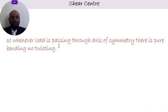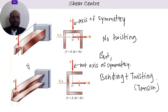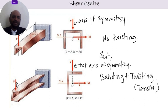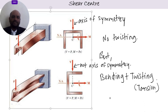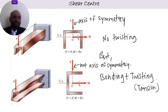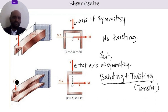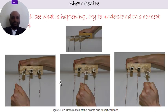Whenever the load passes through the axis of symmetry, there is pure bending and no twisting. For a C-section with load applied along its axis of symmetry, there will be no twisting. But if the C-section is inverted and the load is applied not along the axis of symmetry, there will be bending plus twisting — that is, torsion.